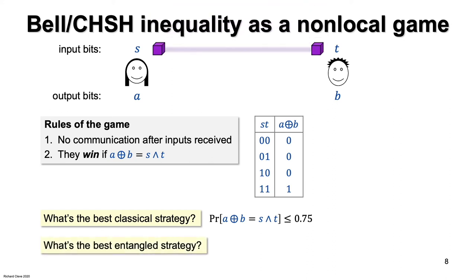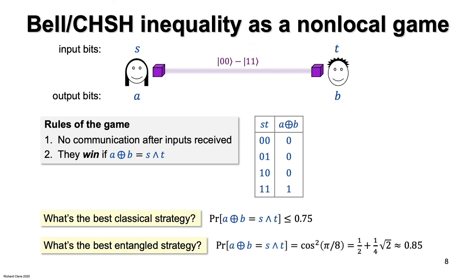What's the best success probability possible by an entangled strategy? Please pause to think about this. It's the cos squared of pi over 8, which is around 85%, and this is achieved with one Bell state of entanglement.